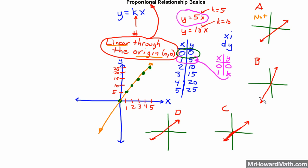Next one, B. It is a line, so check on the linear part, and it also goes right through the origin. So yes, this one is proportional.